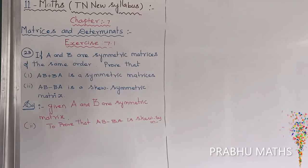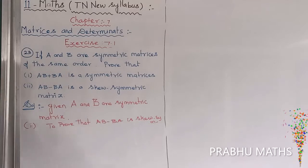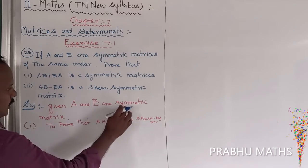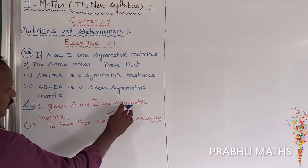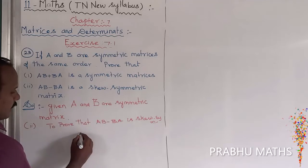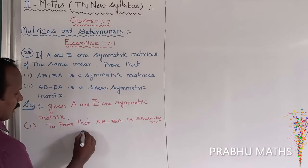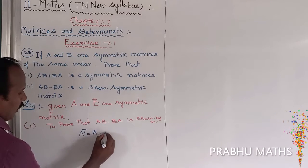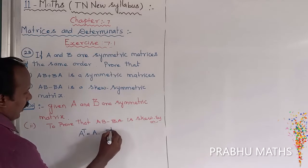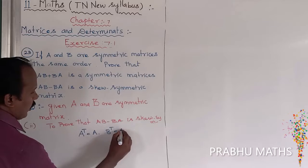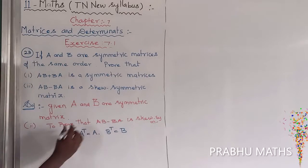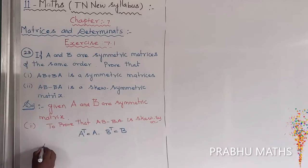For symmetric matrices, A transpose equal to A, and B transpose equal to B. Let us take that for the proof.